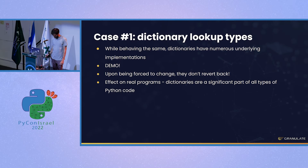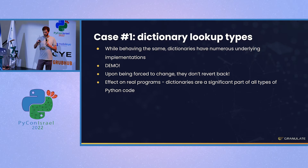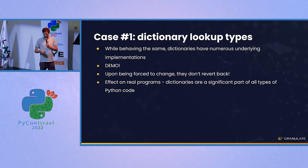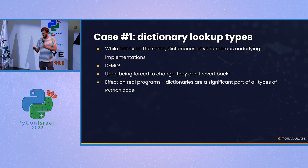While this seems insignificant — it went from 360 microseconds to 450 microseconds — remember that a typical Python program can spend more than 10% of its time doing dictionary lookups just in the Python environment, not counting your own data structures. So you have to maintain fast lookups in your dictionaries if you care about performance.